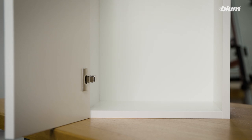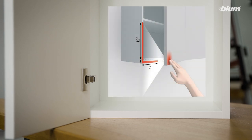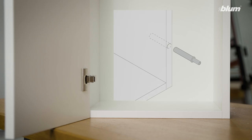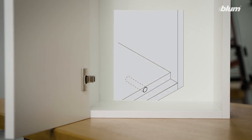When determining the placement of your Tip-On unit, it's recommended that you attach it exactly where the handle would be. As you can see, the optimal placement of the unit in overlay applications is in the bottom of the side panel. The optimal placement for inset applications is in the far side of the bottom panel.